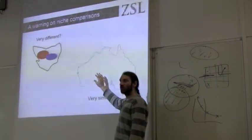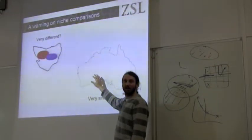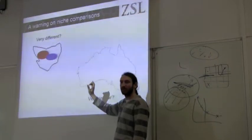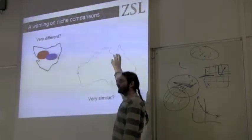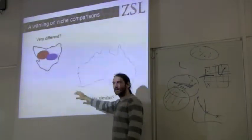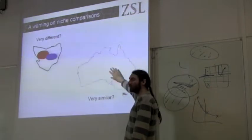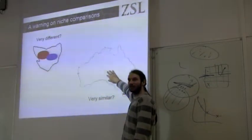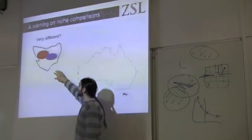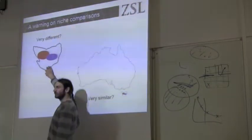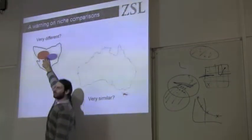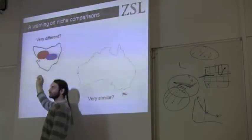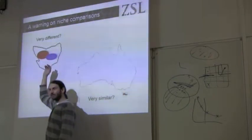We need to remember what we're comparing. We're not just comparing presence — we're comparing absence. In this context, our niches are very similar because they all predict absence in the same place. In this other instance, they're very different because they predict lots of presences in very different places, proportional to the background.